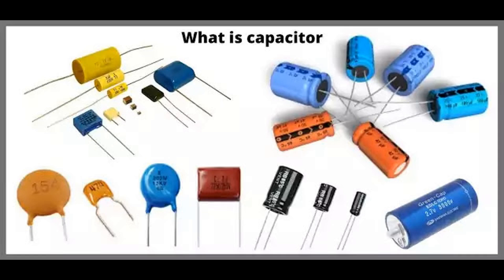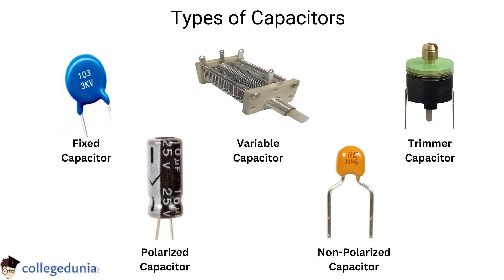Capacitors are commonly used in electric motors for both starting and running operations. Different types of capacitors are employed for these two purposes to ensure optimal motor performance. Motor starting capacitors are typically electrolytic capacitors. There are two main types: electrolytic start capacitors and electrolytic start/run capacitors. The starting capacitor provides an extra boost of energy to the motor during the startup phase.